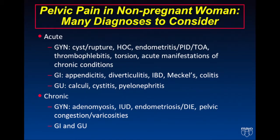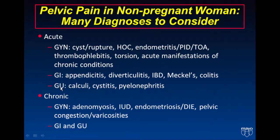A woman who presents to the emergency room with acute pelvic pain can have many different diagnoses that you have to consider. Ultrasound plays an important role in diagnosing most, if not all, of these conditions. The things you might consider include the gamut of GYN diseases, gastrointestinal conditions, and urinary tract abnormalities in both the acute and chronic setting.